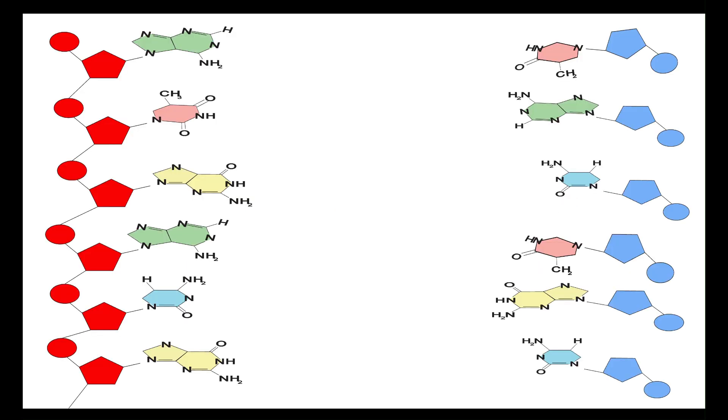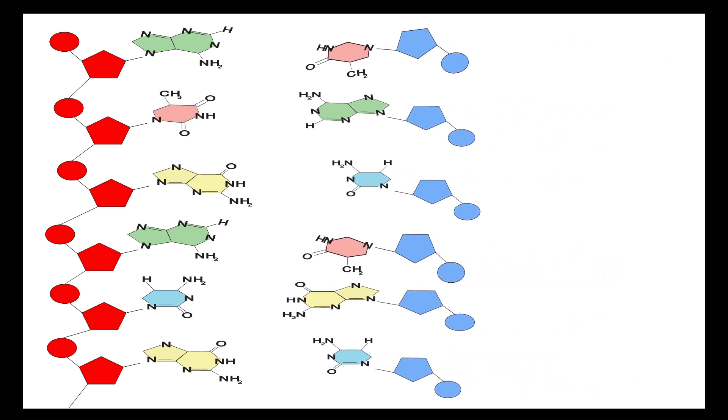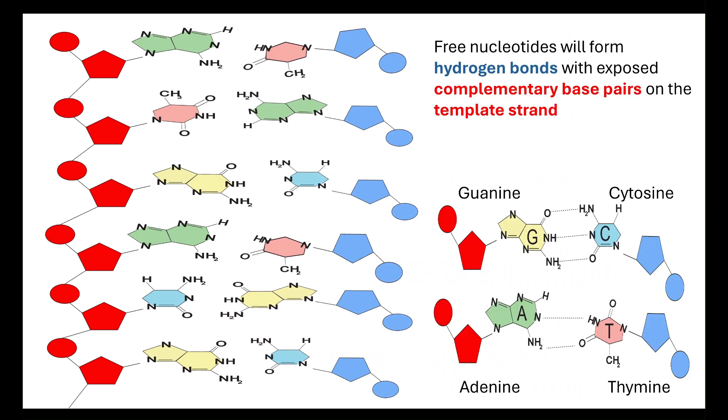By using the helicase, we unzip and break those hydrogen bonds. So now we have one template strand and we have free nucleotides. What will happen is those free nucleotides will actually come along and form hydrogen bonds with those exposed complementary base pairs. Because we've separated the DNA strand, which is made up of two anti-parallel strands, this is happening on both strands.